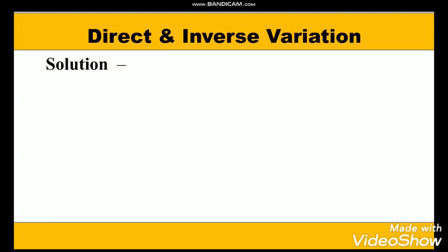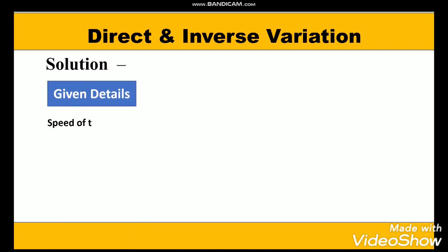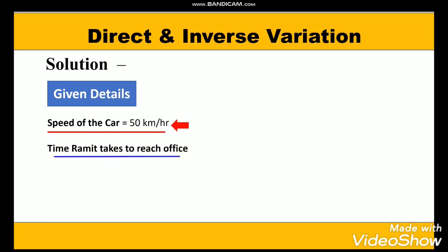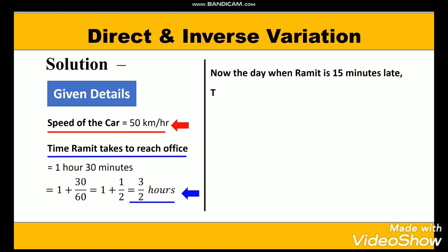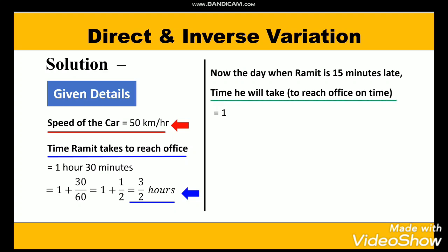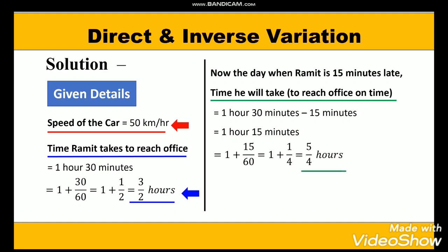We have been given that speed is equal to 50 km per hour and the time taken by Ramit to reach the office is 1 hour 30 minutes. We shall convert 1 hour 30 minutes into hours by dividing 30 by 60, and we get 3/2 hours. Now, one day he got 15 minutes late, so the time he will take to reach the office will be 1 hour 30 minutes minus 15 minutes, giving us 1 hour 15 minutes. Converting to hours by dividing 15 by 60, we get 5/4 hours.